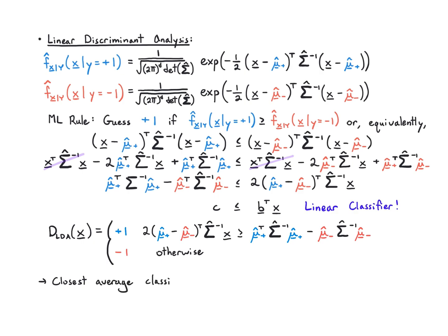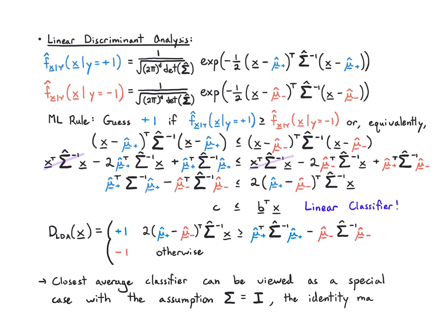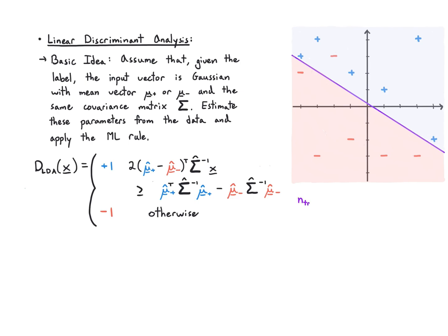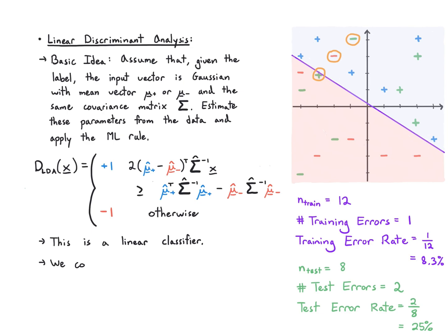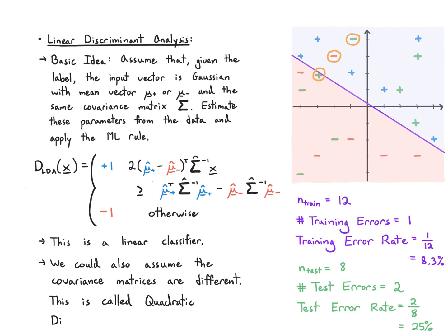The closest average classifier is a special case of LDA where sigma equals the identity matrix. In this example with 12 training points, LDA gives one training error (8.3%) and two test errors out of eight (25%). LDA is a linear classifier with a linear decision boundary. If we assumed different covariance matrices for each class, we'd get a more complex curved boundary — that's called Quadratic Discriminant Analysis (QDA).